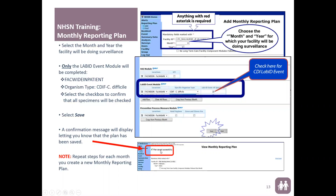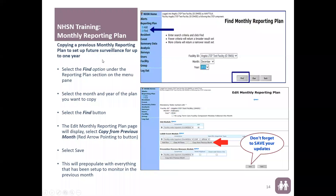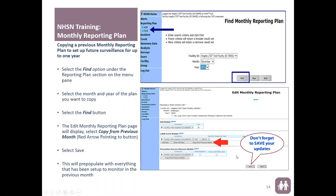There is also an option to copy the monthly reporting plan — you can copy up to 12 months worth of reporting plans, which saves time in the future. Instead of going to Add, select Find, then select the month and year you want to copy and hit Find. It will pull up that plan, and there's a button that says 'Copy from Previous Month.' Select that button, then select Save, and you've created a copy for the next month. Repeat this process to create up to 12 months worth of reporting plans.